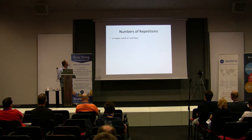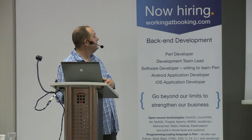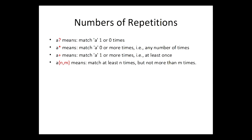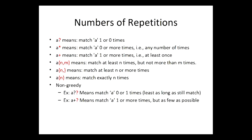Numbers of repetitions: if you put a question mark after what you're looking for, it'll match it zero or one times. The asterisk means match it zero or more times — it'll match all the time because it can match zero times. The plus means match it one or more times, at least once. {N,M} means find it at least N times but no more than M times. {N} means match exactly N times, like the F{2} earlier. These are greedy modifiers. If you put another question mark at the end of any of these, it makes it non-greedy, meaning it matches the fewest number of times possible.